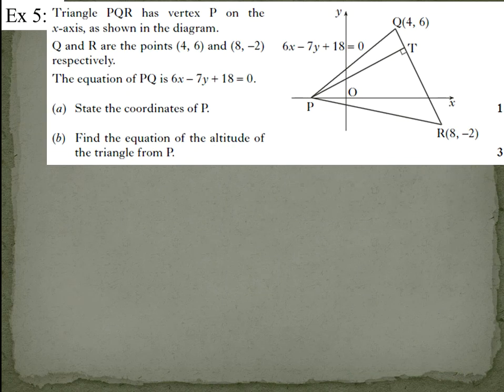Example five. Triangle PQR has vertex P on the x-axis, as shown in the diagram. Q and R are the points (4, 6) and (8, -2) respectively. The equation of PQ is 6x minus 7y plus 18 equals zero. Part a says state the coordinates of P and part b find the equation of the altitude of the triangle from P. Key thing here, please, please, please read the question. They actually say in words and on the diagram that triangle PQR has a vertex P on the x-axis. That means they are giving you part of P's coordinate already. It's going to have a y coordinate of zero, because it is lying on the x-axis. Not only do they say it in words, they show it in the diagram. That's important because the fact that state the coordinates of P is only worth one mark, because you're already given part of it in the words.